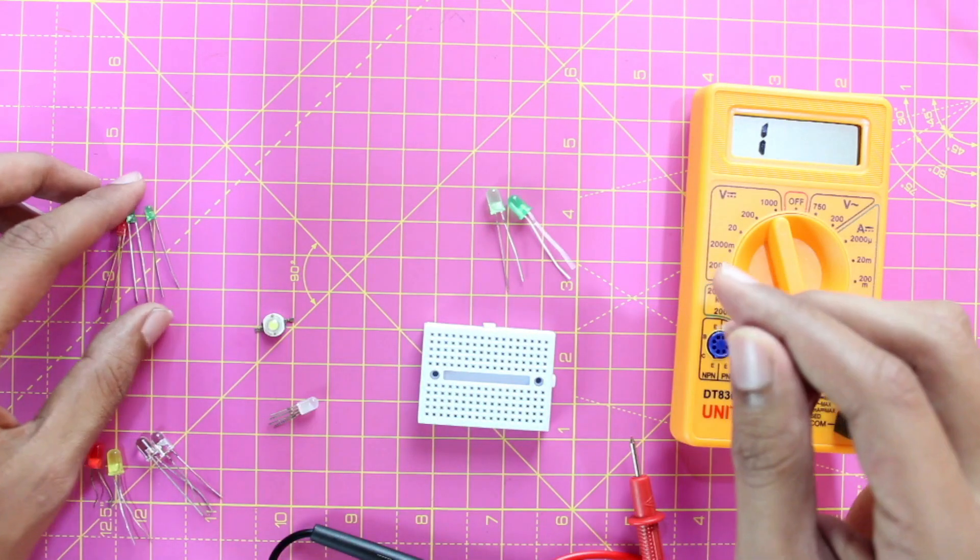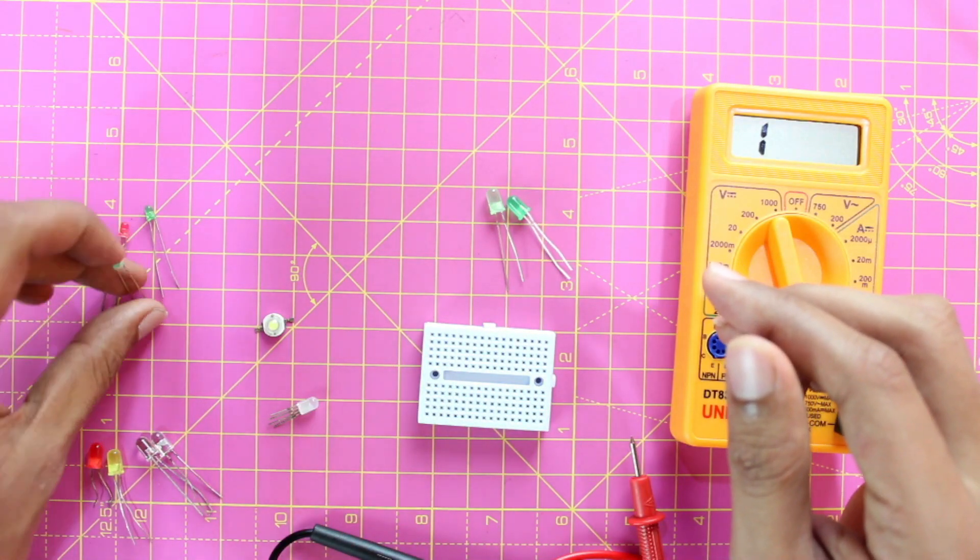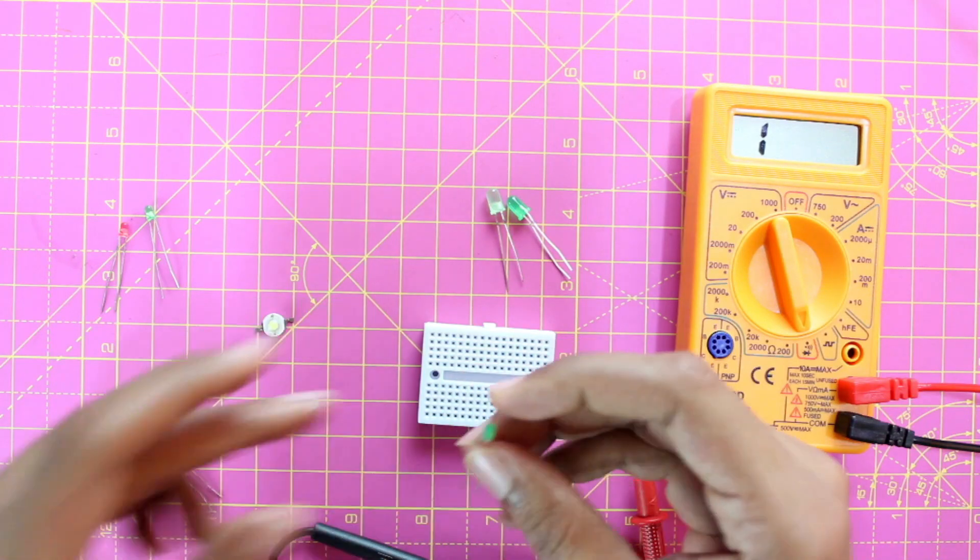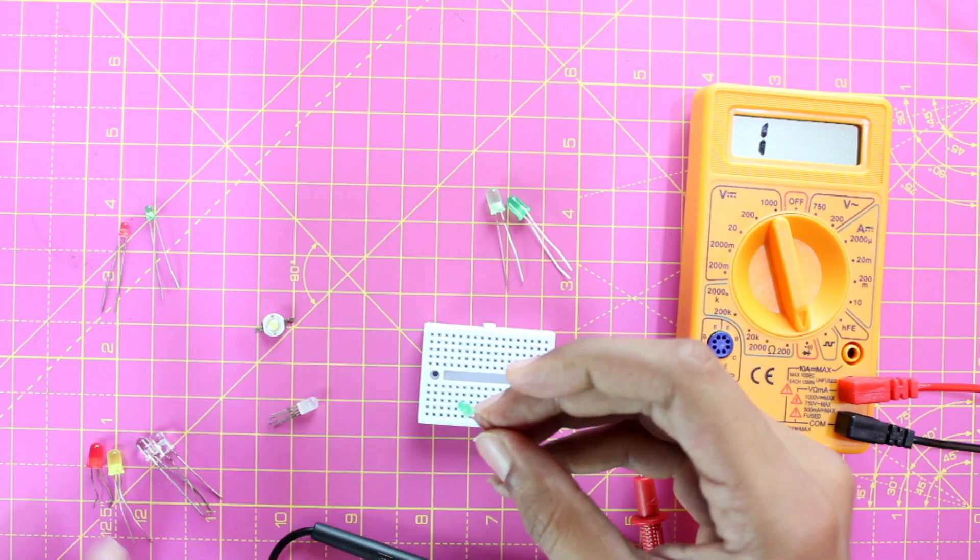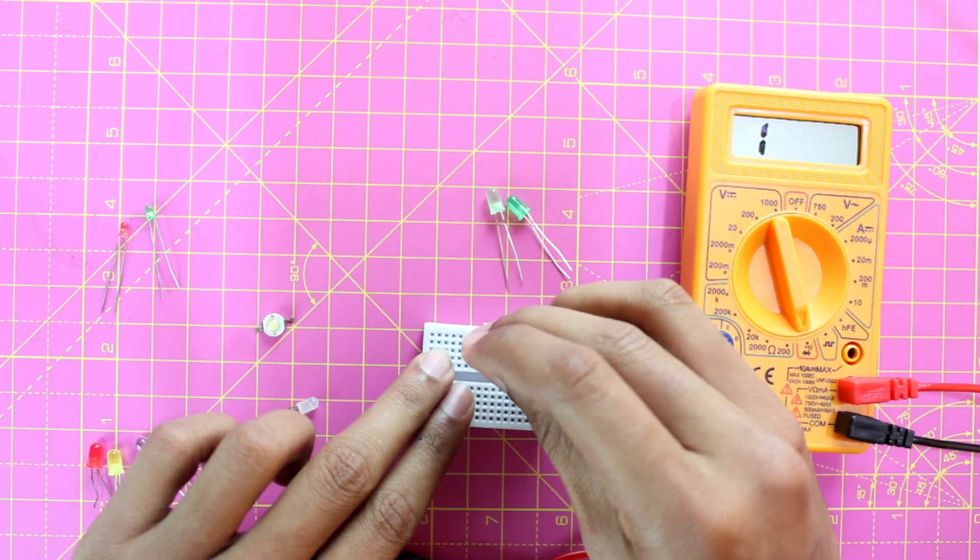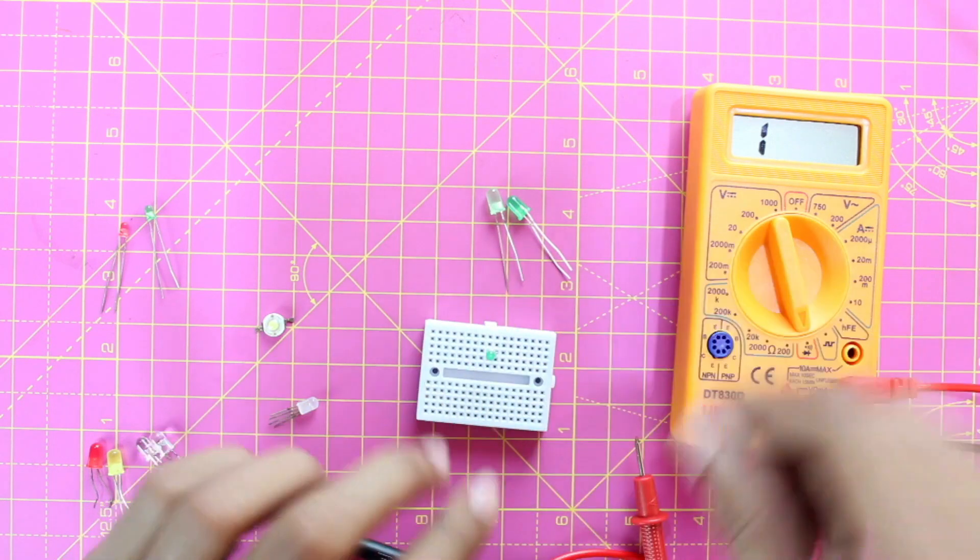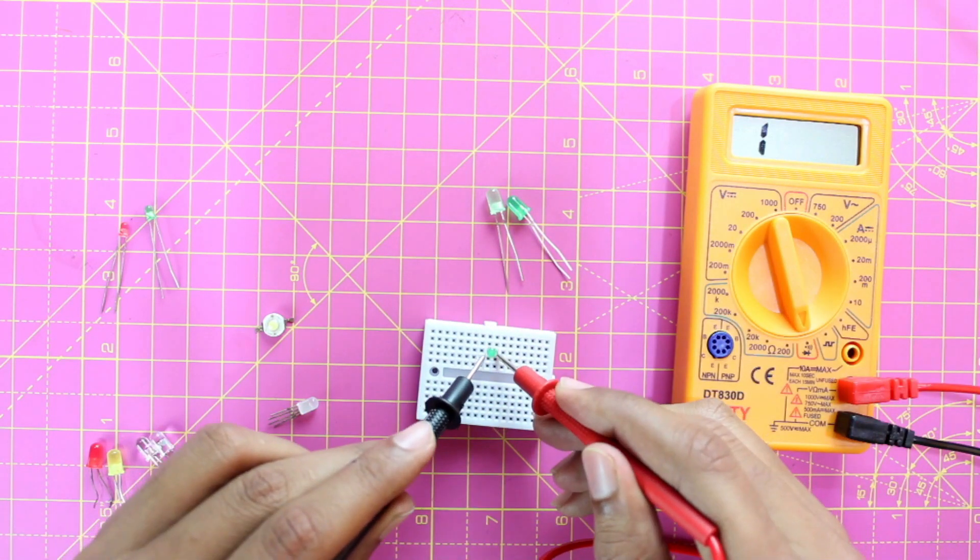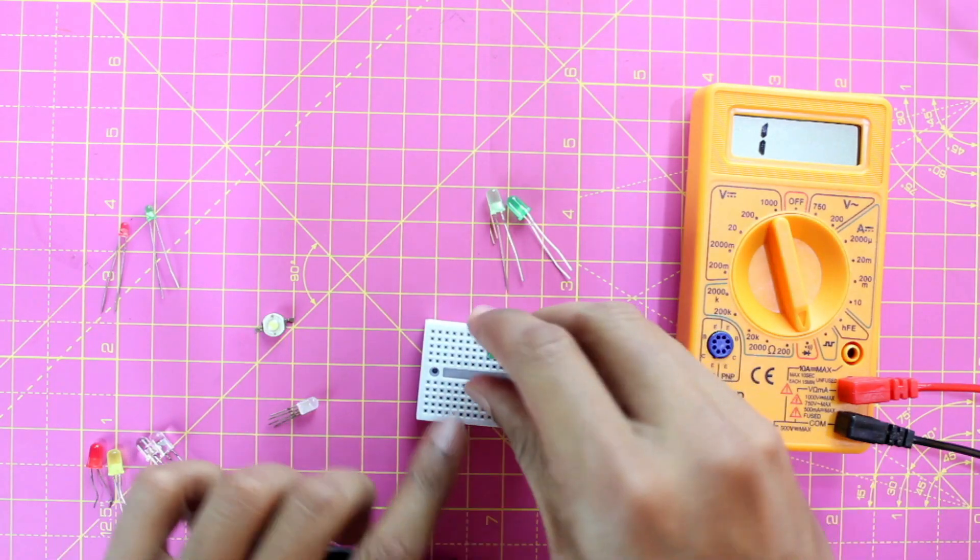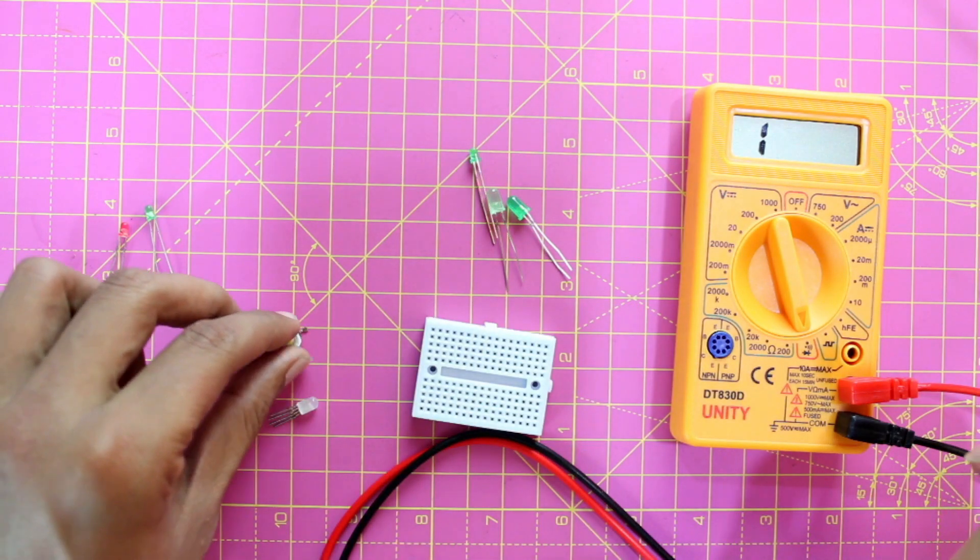It will work the same even for a 3mm LED. The smaller ones are called the 3mm LED and these are the 5mm LED. Irrespective of what color it is or the size, it will work fine. See, this LED is also working. This method will even work for high power LEDs.